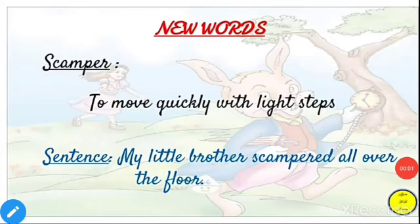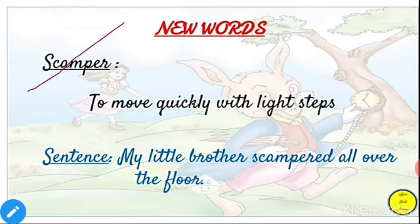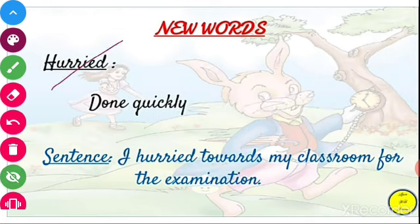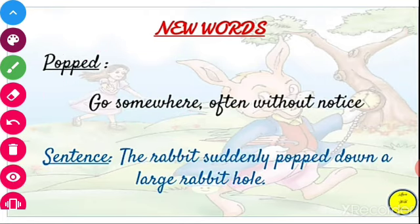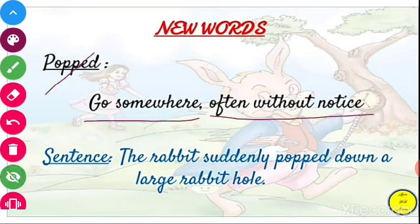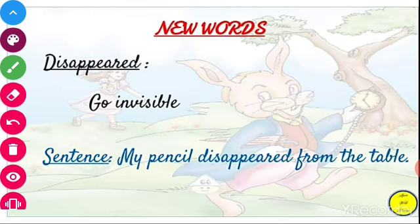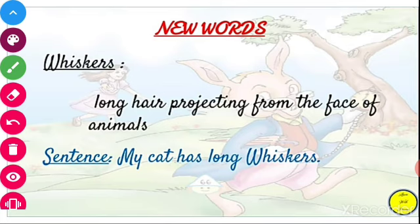Now we are going to learn new words and their meanings with example sentences. 'Scamper' means to move quickly with light steps. Sentence: My little brother scampered all over the floor. 'Hurried' means done quickly. Sentence: I hurried towards my classroom for the examination. 'Popped' means to go somewhere often without notice. Sentence: The rabbit suddenly popped down a large rabbit hole. 'Disappear' means to go invisible. Sentence: My pencil disappeared from the table. 'Whiskers' means long hair projecting from the face of animals. Sentence: My cat has long whiskers.